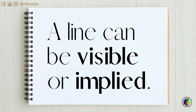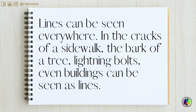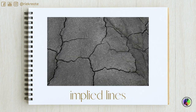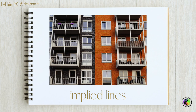A line can be visible or implied. Visible lines are lines that we create when we draw or paint. Lines can be seen everywhere — in the cracks of a sidewalk, veins of a leaf, lightning bolts, and buildings. These are all implied lines.